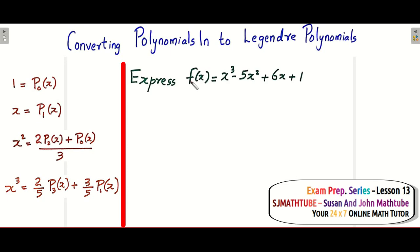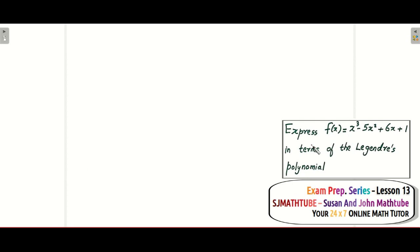The most repeated question in this Legendre section is: they give us a polynomial - a cubic polynomial - and want us to express it in terms of Legendres. I've already derived 1 is P0(x), x is P1(x), x² is this, x³ is this. Now things are going to be very easy. I'll keep the question here and write 1, x, x², x³ for your convenience.